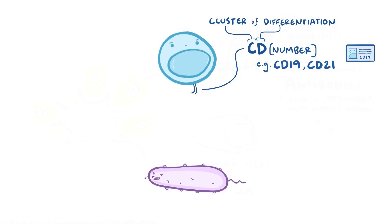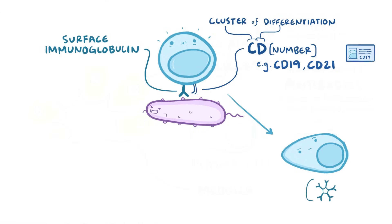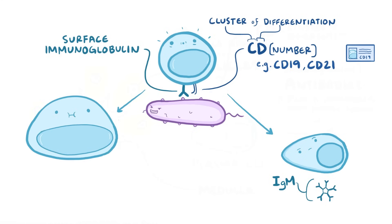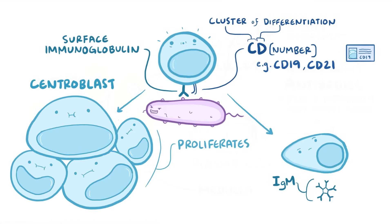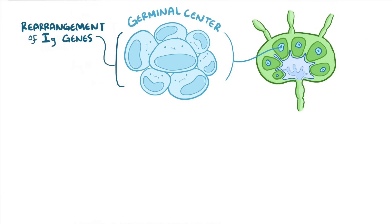A B cell is activated when it encounters an antigen that binds perfectly to its surface immunoglobulin. Some of these activated B cells mature directly into plasma cells and produce IgM antibodies. Other activated B cells go to the center of a primary follicle in the lymph node, where they differentiate into B cells called centroblasts and start to proliferate or divide.